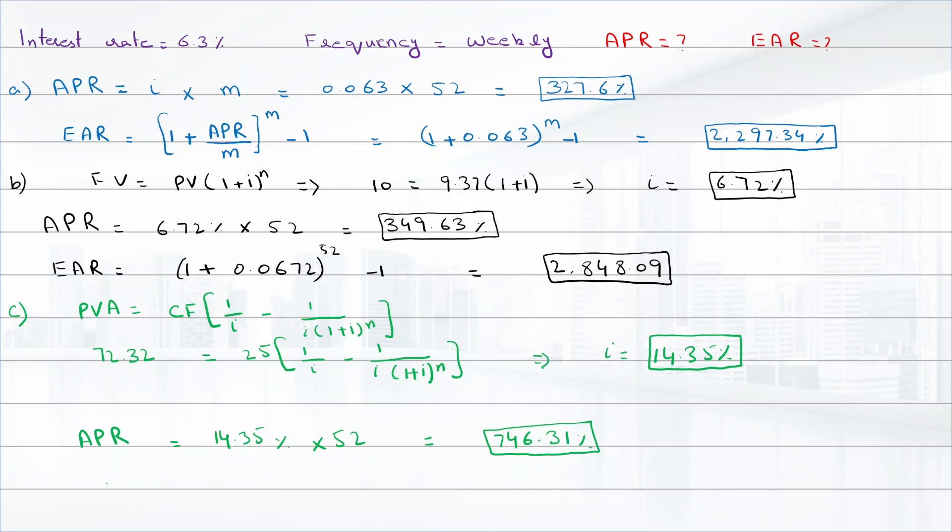And the EAR is (1 + 0.1435)^52 - 1, and the answer is 16,735.31 percent.